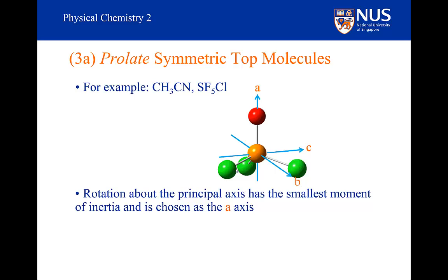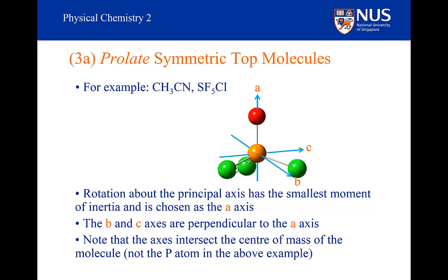I won't be asking you to go through that kind of tedious geometry in an examination — I will tell you whether it is prolate or oblate. The B and C axes are perpendicular to the A axis. The rotational axes go through the center of mass, not through the center of the phosphorus atom. In this case, the moment of inertia around the principal axis, I sub A, is smaller than the moment of inertia perpendicular to it.